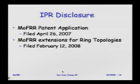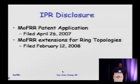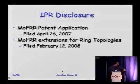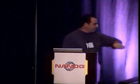The ECMP example and failure detection were put in a Cisco patent, and the ring topology extensions are in another. This is the IPR disclosure slide. We have about 10 minutes for questions — Clarence or I can answer any questions, technical please.